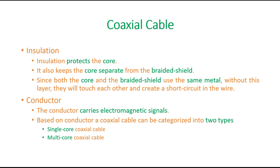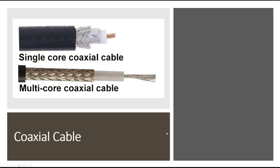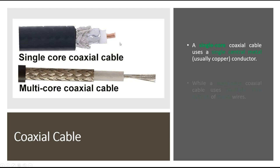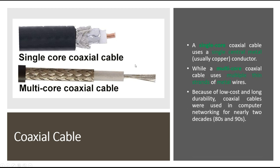Based on the conductor, a coaxial cable is categorized into two types: single core coaxial cable and multi-core coaxial cable. The single core coaxial cable uses a single central metal wire, usually copper, as the conductor. The multi-core coaxial cable uses multiple thin strands of metal wires. Due to low cost and long durability, coaxial cables were used in computer networking for nearly two decades.